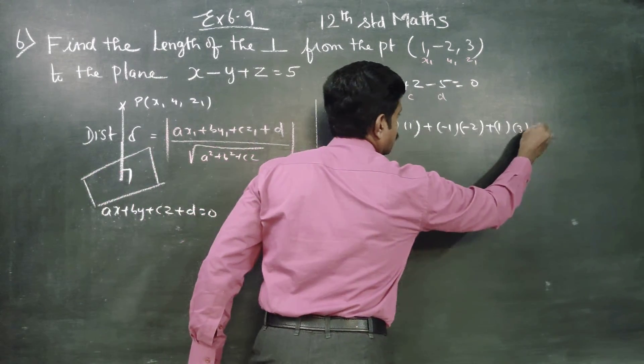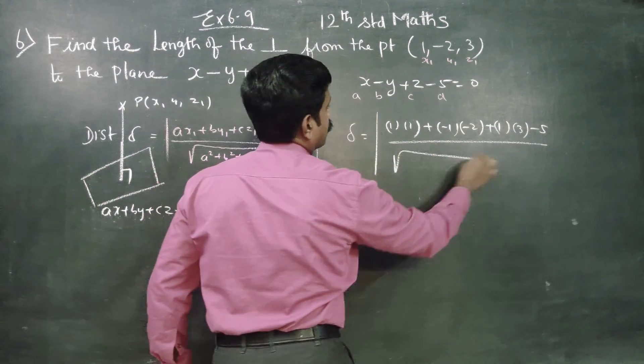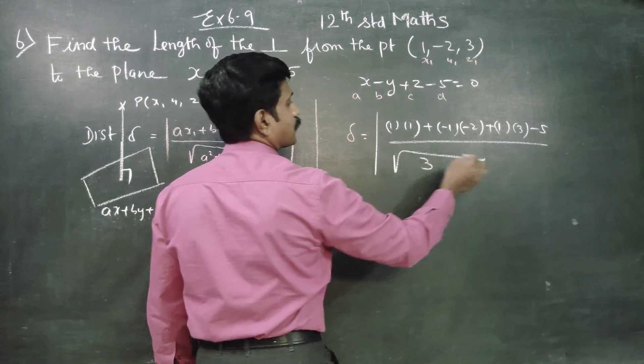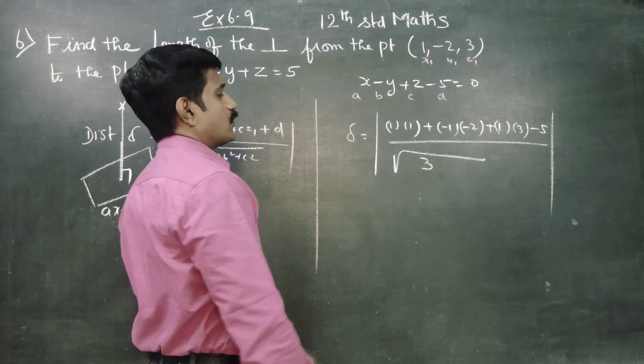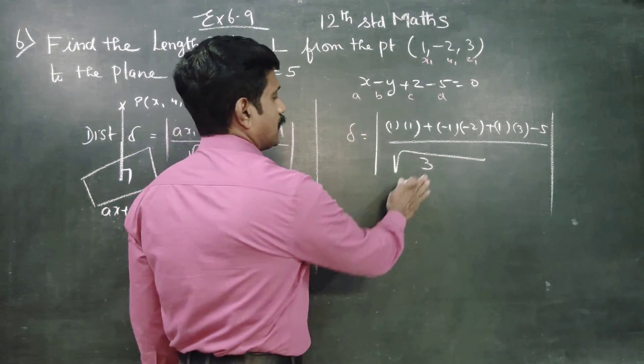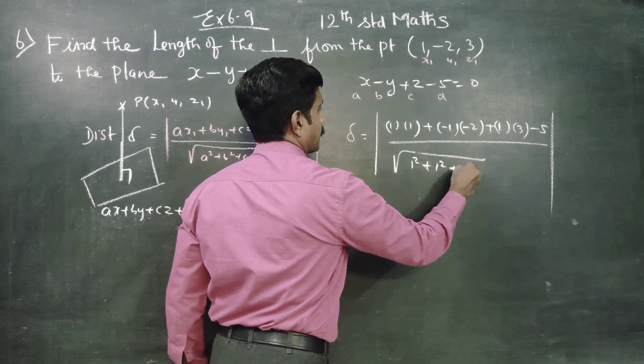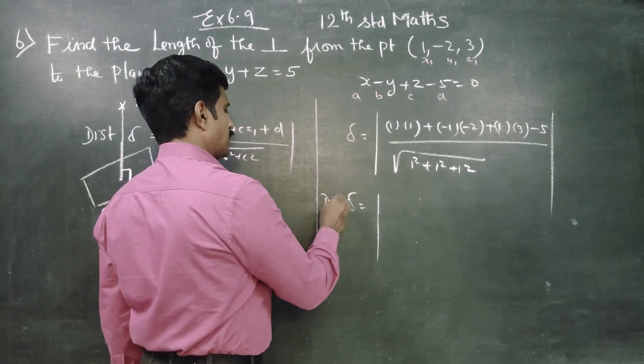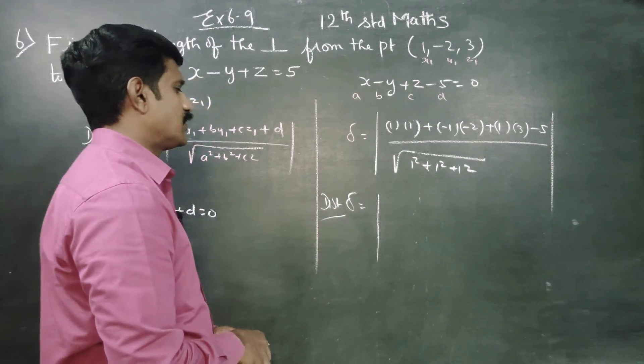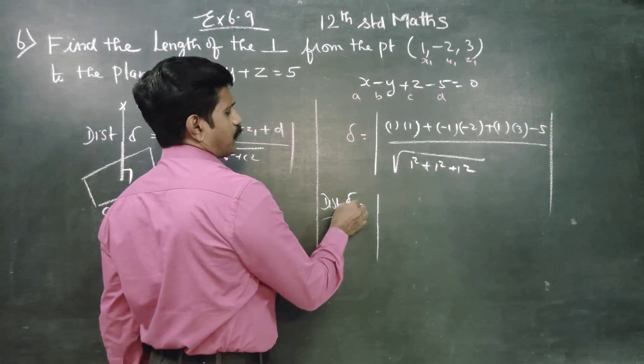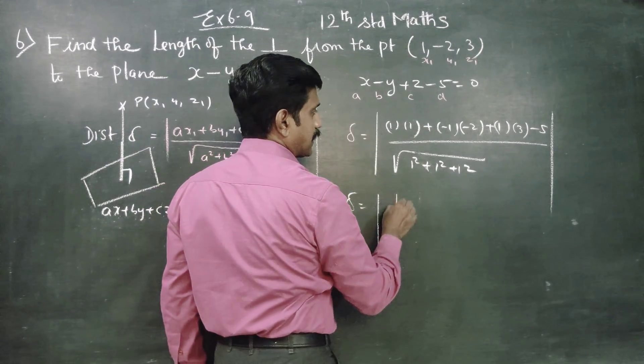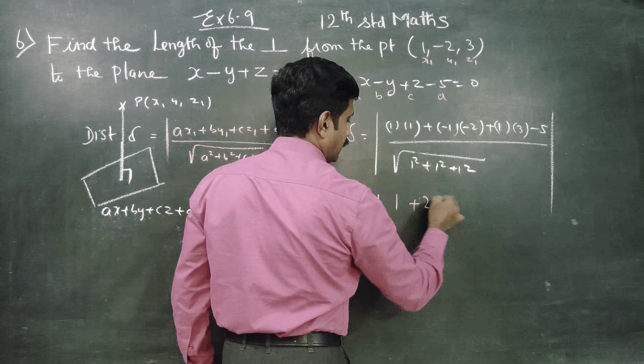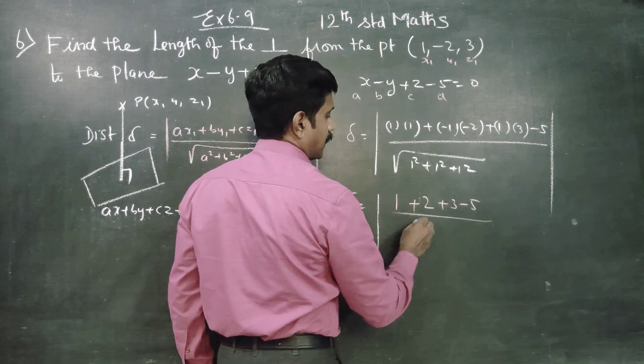Actually I am going to have -5 divided by square root of (a² + b² + c²). 1² + (-1)² + 1² equals 1 + 1 + 1. Distance is 1 + (-1 times -2) which is plus 2, plus 3, minus 5, all divided by √3.